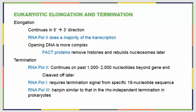After initiation begins, we worry about elongation and termination. Elongation continues in the 5' to 3' direction, and it's Pol 2 that does the vast majority of transcription. Opening the DNA as we move down eukaryotic chromosomes is more complex — some proteins remove the histones to get them out of the way and help rebuild nucleosomes after transcription. For termination, Pol 1, 2, and 3 end differently. Pol 2 continues past the gene and that last bit is cleaved off later. Pol 1 requires a specific nucleic acid termination signal, while Pol 3 makes a hairpin similar to Rho-independent termination in prokaryotes.